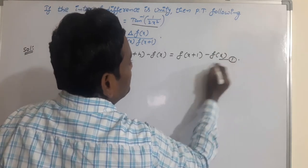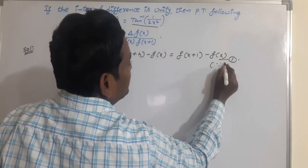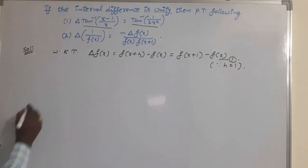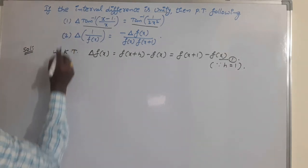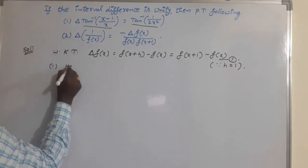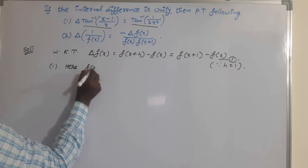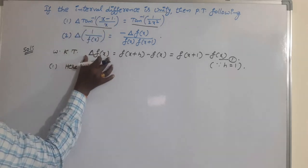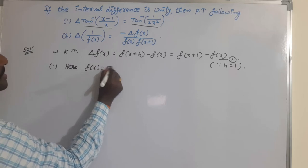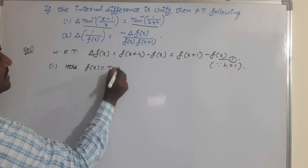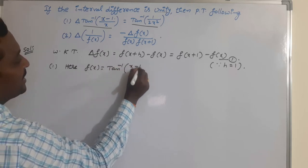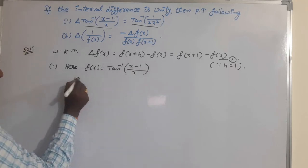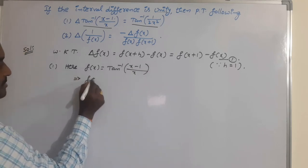Since h is given as 1, consider the first problem. Compare the given problem with delta f(x) to identify f(x). The function f(x) is tan inverse of (x minus 1) by x.